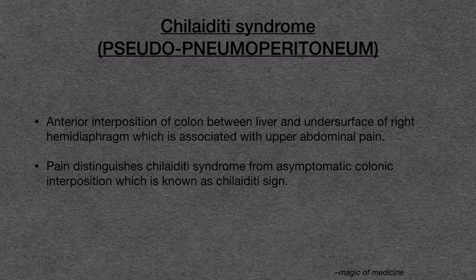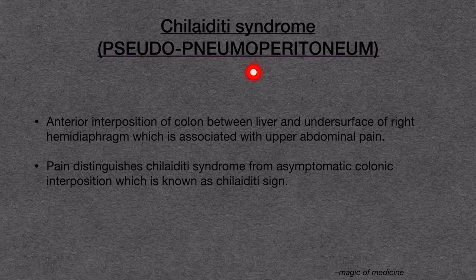Chilaiditi Syndrome is a very rare but important condition, often misdiagnosed as pneumoperitoneum. Hence, it is also named as pseudopneumoperitoneum. The proper diagnosis prevents unnecessary surgery, because if we report Chilaiditi as pneumoperitoneum, the patient will have to undergo unnecessary surgery and inconvenience, which can be prevented if we are able to diagnose it properly.